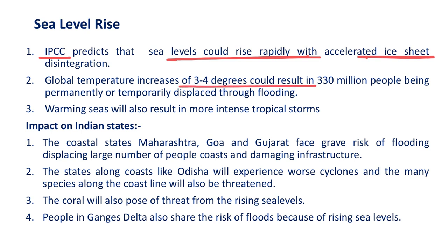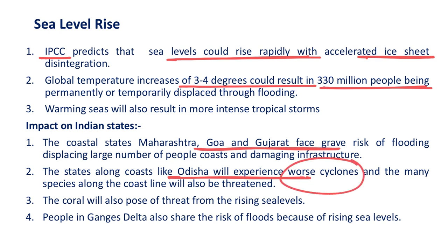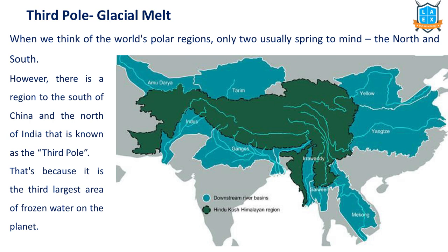A global temperature increase of 3 to 4 degrees can result in 330 million people being displaced — called climate refugees. In India, Maharashtra, Goa, and Gujarat have the gravest threat. States like Odisha and West Bengal experience severe cyclones due to climate change. The Gangetic Delta experiences floods due to heavy melting from Himalayan glaciers. The Karakoram-Himalayan-Hindu Kush (KHH) region is called the third pole because it has the highest reserve of glaciers after the north and south poles.